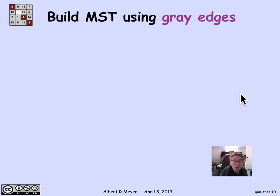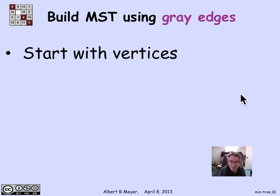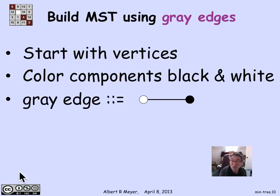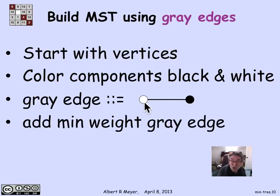The idea is to build the spanning tree using gray edges. Starting with the vertices, we begin building a tree. At any point, we have a bunch of edges that will be part of our spanning tree — they form a forest with no cycles but not yet connected. At each stage, we look at the connected components of the current graph, color them black or white, and look at the gray edges. A gray edge is defined as an edge where one endpoint is black and the other is white. We then pick a minimum weight gray edge.